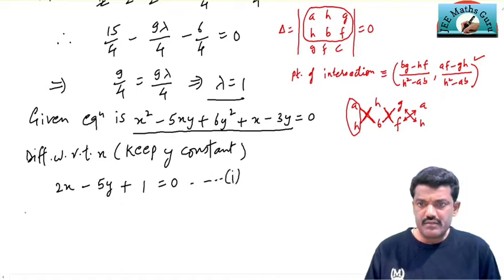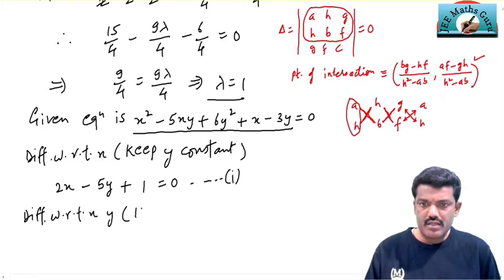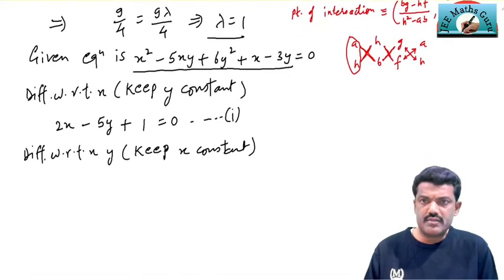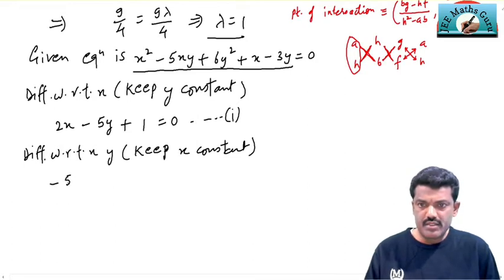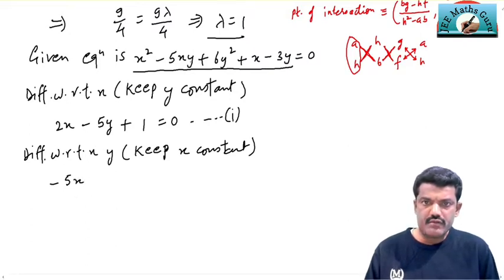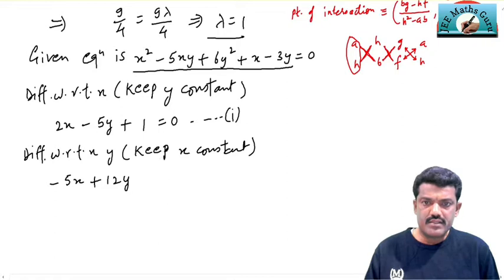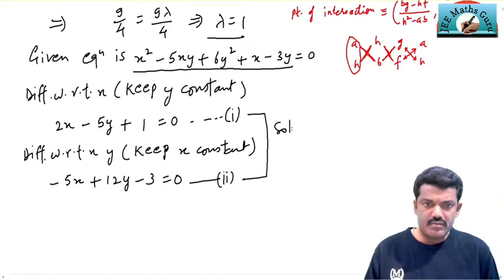Now we differentiate the equation again, this time with respect to y, keeping x constant. Derivative of x² is 0, so we get −5x × 1, then 12y from 6y², x is constant so its derivative is 0, and −3. So the second equation is: −5x + 12y − 3 = 0.